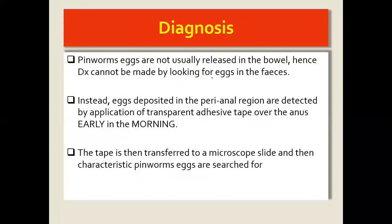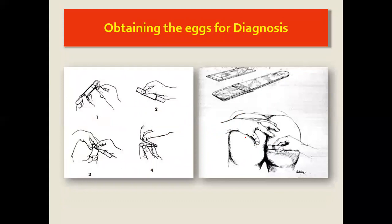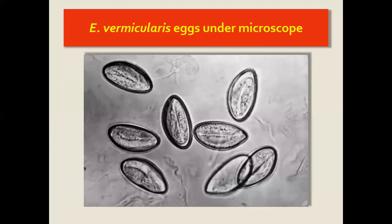Diagnosis is quite simple but not straightforward, because we do not normally expect to find the eggs in the feces. Therefore, looking for eggs in the feces would not help. Instead, we do a tape test, where you take a tape and place it on the perianal region, especially early in the morning — and we know why. Then you place this tape on a microscope slide and observe it. This is illustrated here: the tape is placed on a spatula, tapped along the perianal region, then placed on the microscopic slide and visualized. This is what we expect to see as the eggs under a microscope.